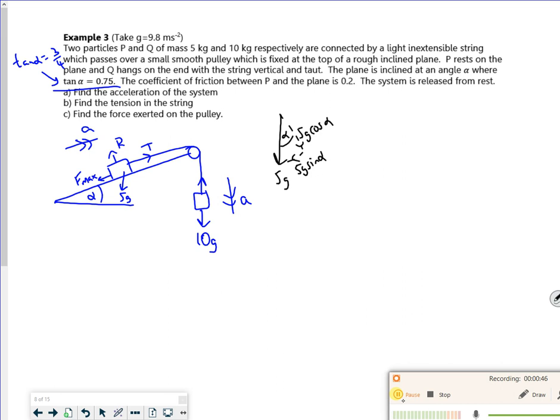You might want to pause it and just draw it. I'm actually doing it myself. So let's have a look at tan alpha. Tan alpha was 3 over 4, so that's the opposite and the adjacent. Is that a 3-4-5 triangle?